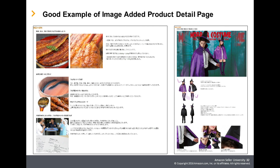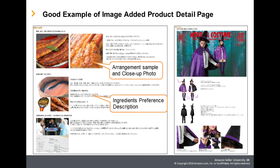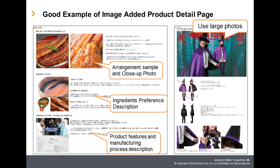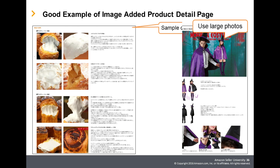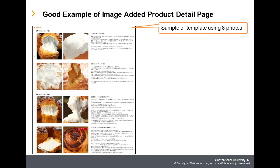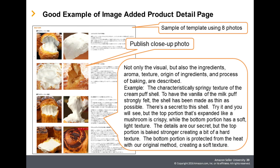For example, in this case, product arrangement is shown, preference for ingredients is described, the product's features and manufacturing process is described, and a large image is effectively used. Also, in this case, along with the zoom image, not only the visual but also the ingredients, aroma, texture, origin of ingredients, and process of baking are described with images and text.